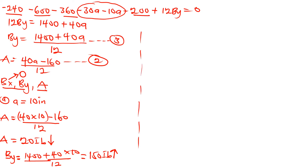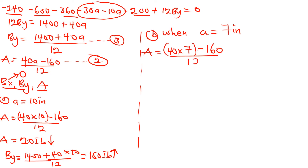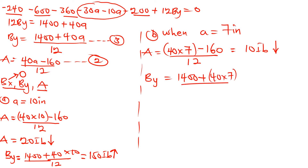For a = 7 inches: reaction A = (40×7 − 160)/12 = (280 − 160)/12 = 120/12 = 10 lb downward. And By = (1400 + 40×7)/12 = (1400 + 280)/12 = 1680/12 = 140 lb upward.